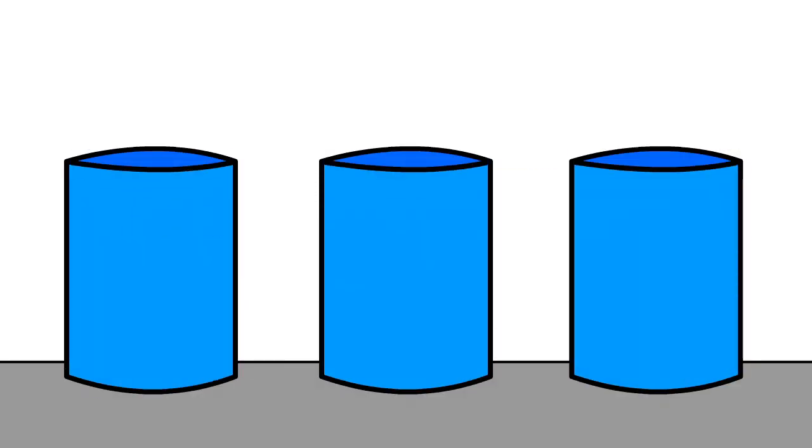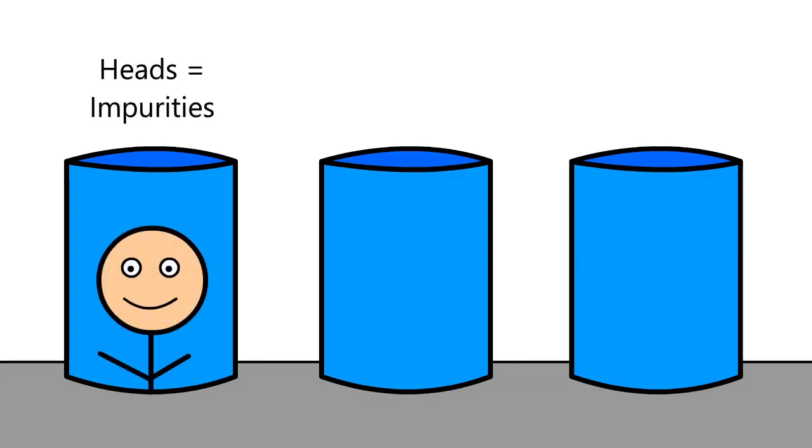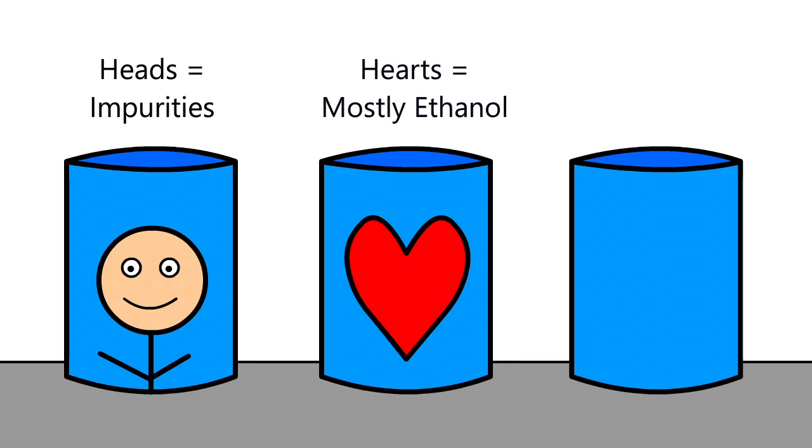The first 5-10% of the collected liquid, called the heads, is made up of the many volatile impurities that were produced in the mash. The bulk of the collected liquid, called the hearts, contains the distilled ethanol. The last portion of the liquid is called the tails, and contains a relatively low amount of ethanol.